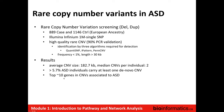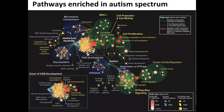They found that autism spectrum disorder cases carried more copy number variants, and especially de novo copy number variants which were not inherited from the parents. But there weren't that many genes linked to the copy number variants that were repeatedly seen — it looked like there were different copy number variants in many of the different individuals. So we did a pathway enrichment analysis on this data.